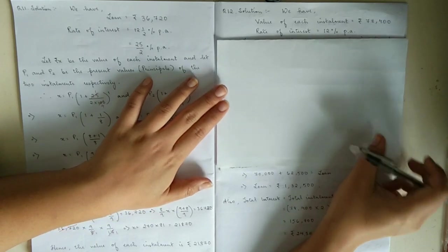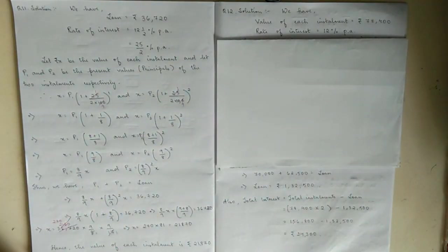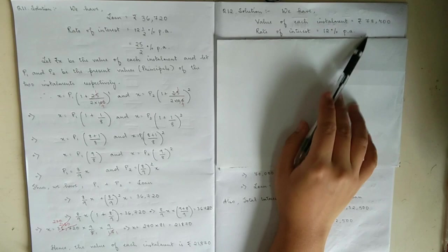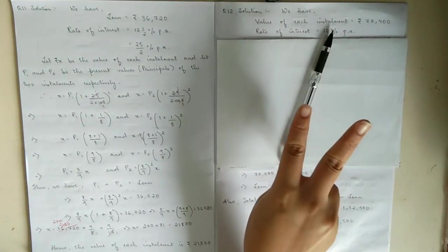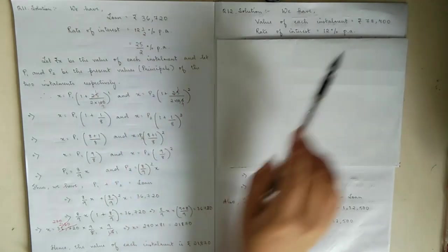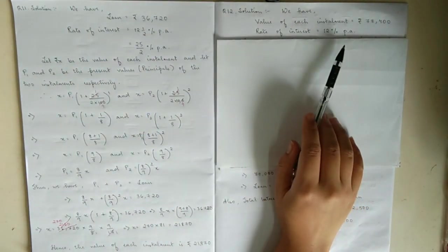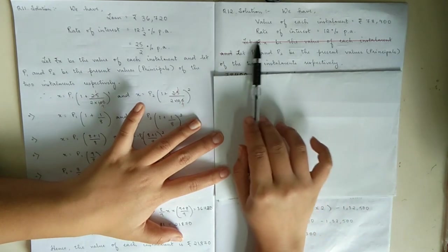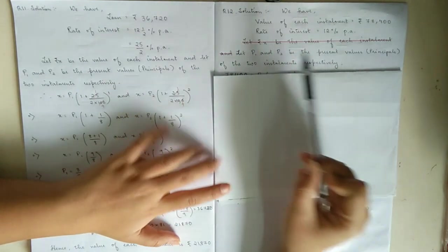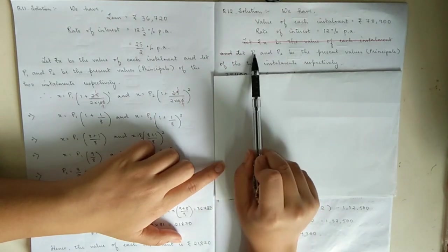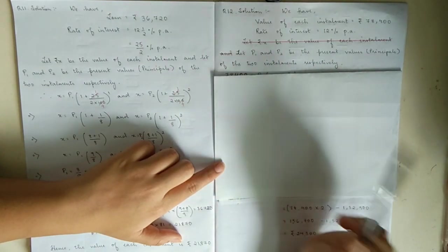Now moving on to question number twelve. Jaden took a loan from the State Bank of India at a rate of interest of 12% per annum compounded annually. You don't have to make any changes since it's annually. He paid it back in two installments of 78,400. In the previous question, they gave loan and we found installments. Now let me show you a common mistake which many people make. You don't need to write 'let rupees x be the value of each installment' because they've already given you the installment.